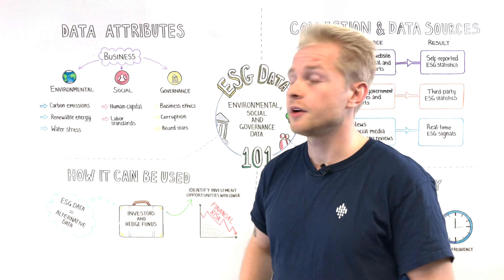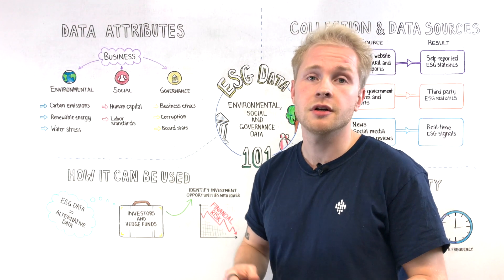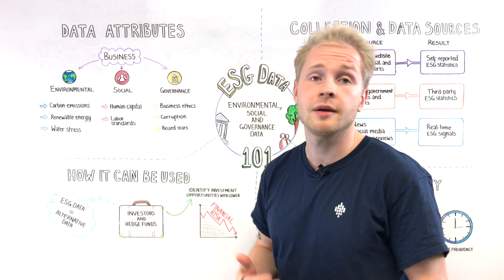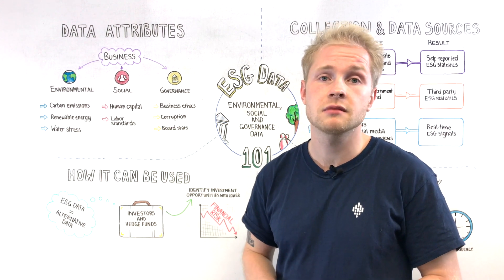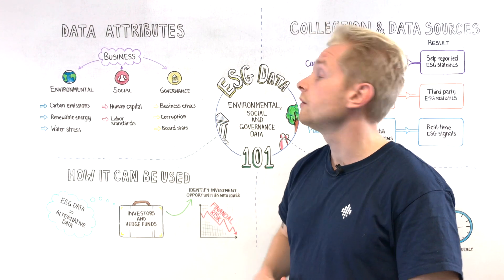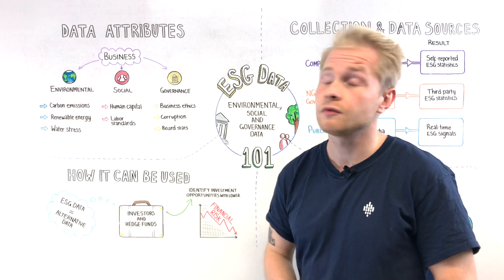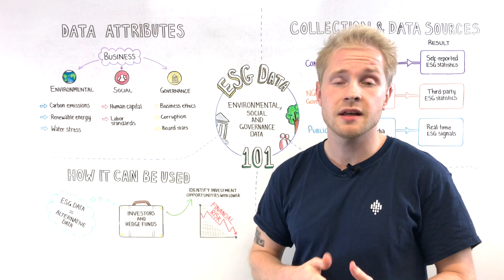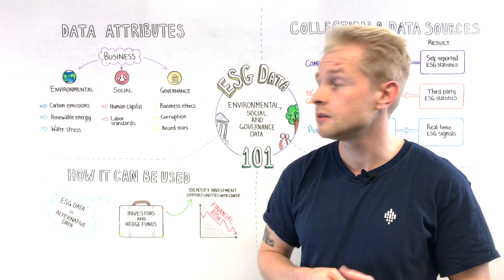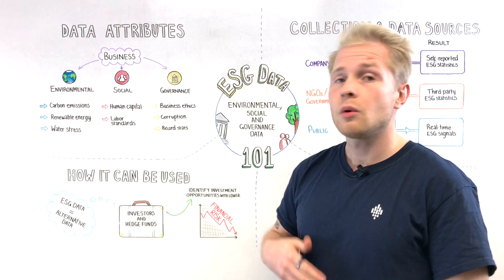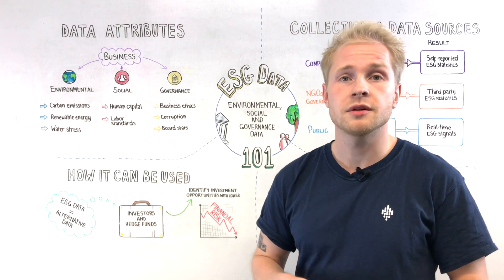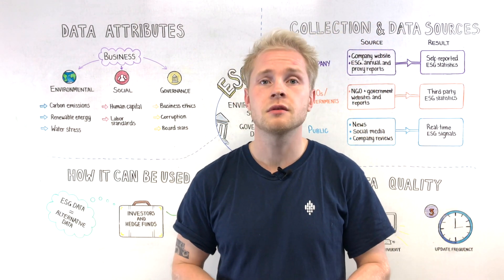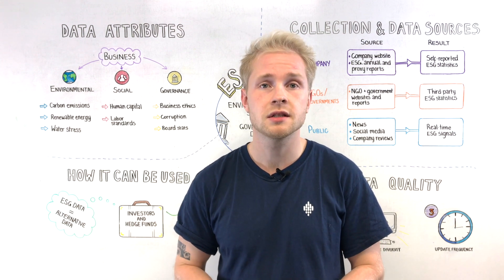Social aspects of a given company can be understood through data on human capital and labor standards. Governance aspects of a given company, for example, could be understood through data on business ethics, their involvement in any corruption, or statistics on the company board. So, there's a lot of information on a singular company that we're able to collect.